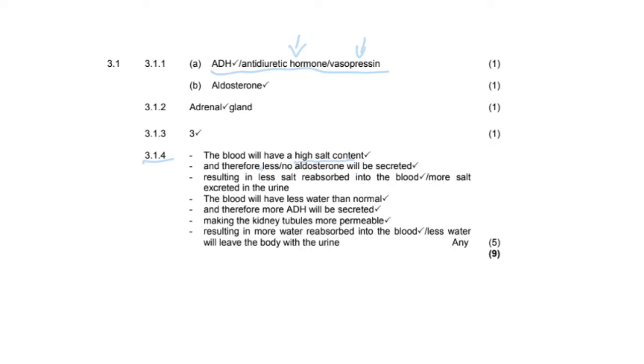But essentially, it still follows the premise or my rule where we have our statement. There is a lot of salt in the blood. Therefore, there is less or no aldosterone, which means less salt is absorbed into the blood. Therefore, blood will have also less water, which means more ADH, which makes the tubules more permeable and more water is absorbed into the blood. So you could have had any five of those answers and you still would have got five out of five.